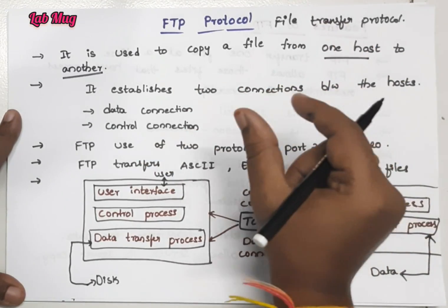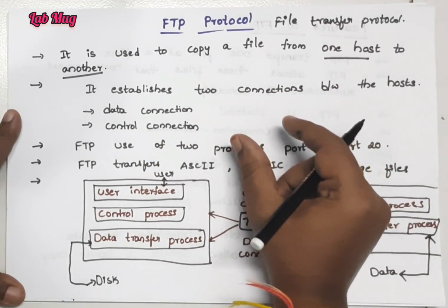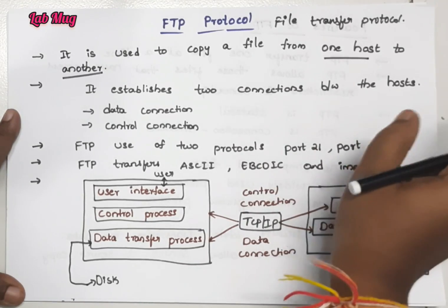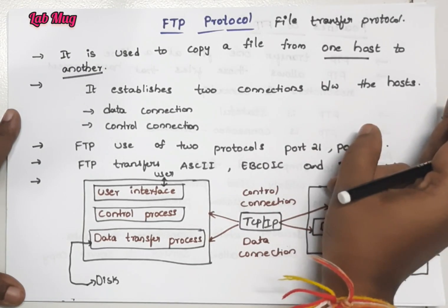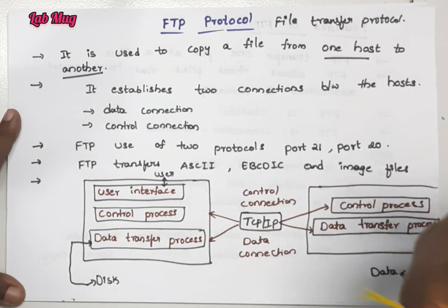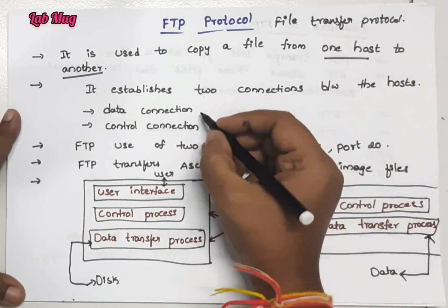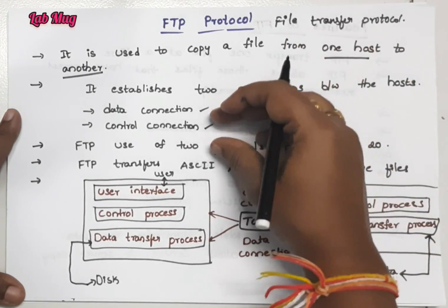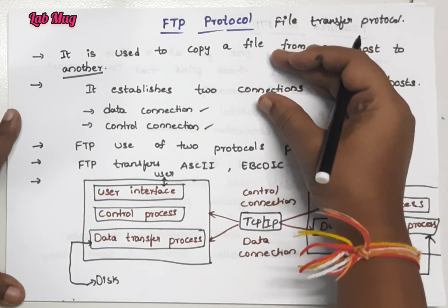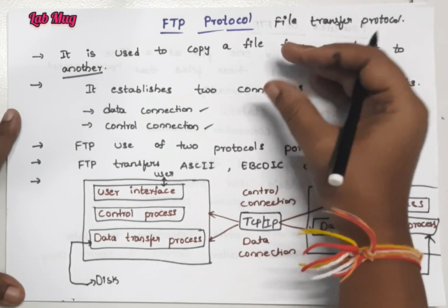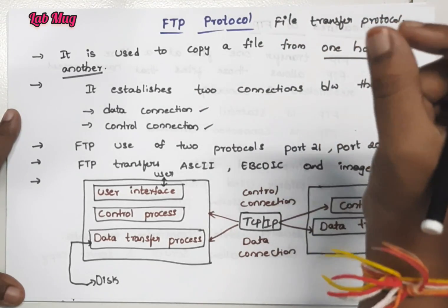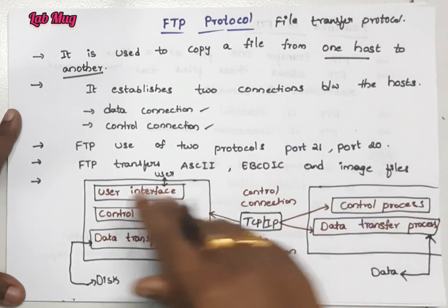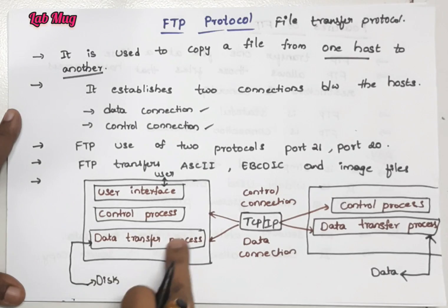The main thing to explain here is that in FTP protocol, there are two connections. Those two connections are the data connection and the control connection. These two connections are performed through FTP protocol.